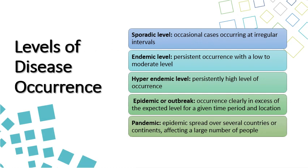Levels of disease occurrence: Diseases have different patterns of occurrence. Sporadic level involves occasional cases occurring at irregular intervals, like MRSA. Endemic level refers to cases present throughout the year but at low levels. Hyperendemic level is similar to endemic but with higher levels of occurrence. An epidemic or outbreak is occurrence above the expected level for a given time, period, and location. A pandemic is an epidemic spread over several countries or continents, affecting large numbers of people, like COVID-19.